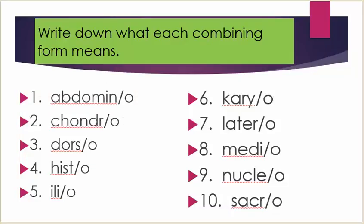Write down what each combining form means. Number one: abdomino. Number two: chondro. Number three: torso. Number four: histo. Number five: ilio. Number six: sacro. Number seven: lateral. Number eight: medial. Number nine: nucleo. Number ten: sacro.